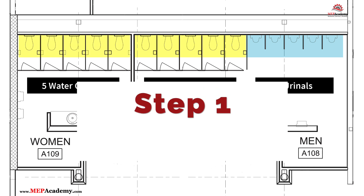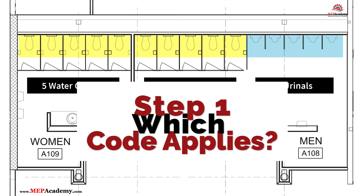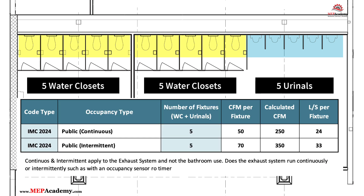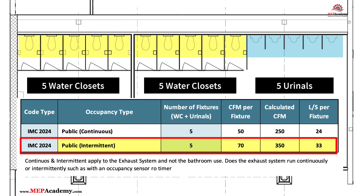Step 1: Determine which code applies. For our example, we'll use the IMC 2024, which uses the terminology of continuous or intermittent operation. We'll assume intermittent operation — the fans turn on with the lights or an occupancy sensor.